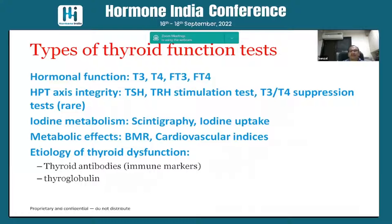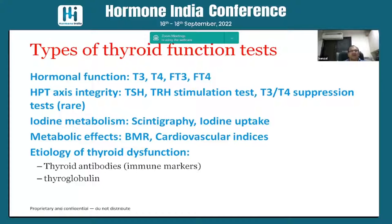The types of thyroid function tests we do include T3, T4, and sometimes free T3, free T4. We have the hypothalamo-pituitary-thyroid axis — to see its integrity we use TSH, and sometimes we do a TRH stimulation test and rarely a T3/T4 suppression test. For iodine metabolism we have iodine uptake and thyroid scintigraphy. We also do immune markers — anti-TPO, anti-thyroglobulin — and anatomically we have MRI, CT, sonography, and FNAB.